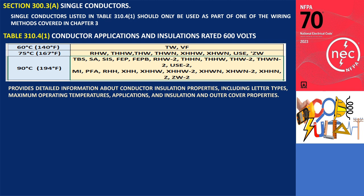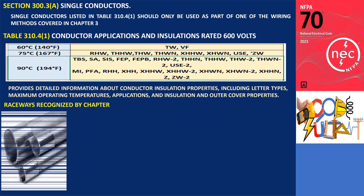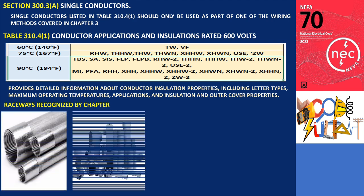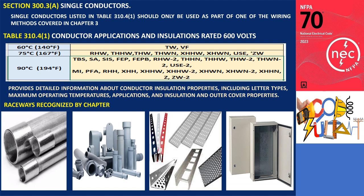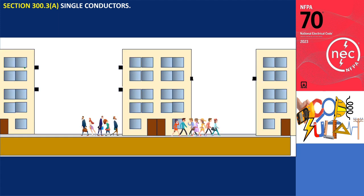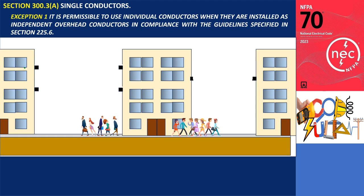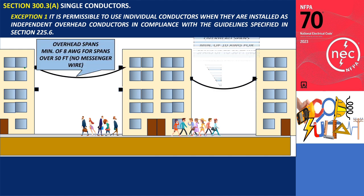These conductors listed in the table should not be used independently as overhead conductors unless they are part of a cable assembly or adequately protected and supported by conduit, tubing, raceway, cable tray, or enclosure. However, if the individual conductors are installed as separate overhead conductors in compliance with Section 225.6, they are not subject to the requirements of Section 300.3a.